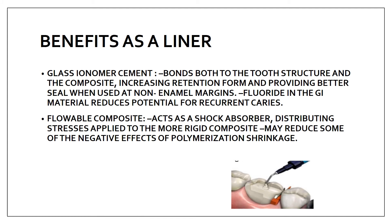Now, what are the benefits of using GIC or flowable composite as a liner? GIC bonds both to the tooth surface and the composite. Since GIC is placed between the tooth surface and the composite, it bonds properly to both, which increases the retention form and provides a better seal. Additionally, fluoride present in GIC reduces the potential for recurrent caries.